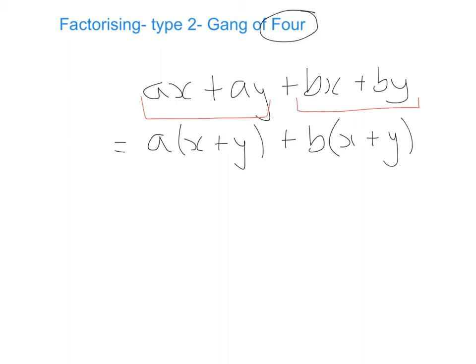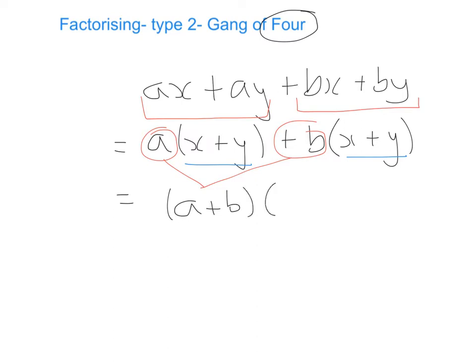What you might notice at this point is that the brackets in both sets of terms are the same. So the last step with a gang of four expression is we bring together the terms in front of the two brackets that are identical and put those into one bracket, which is a plus b, and into the second bracket we put in x plus y. And we're finished — that is our gang of four expression factorised.